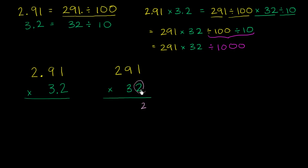2 times 1 is 2, 2 times 9 is 18, carry the 1. 2 times 2 is 4, plus 1 is 5. And now we can think about the 3. Let me throw a 0 here, because this is now a 30. This is in the tens place, so that's why I put a 0 there.